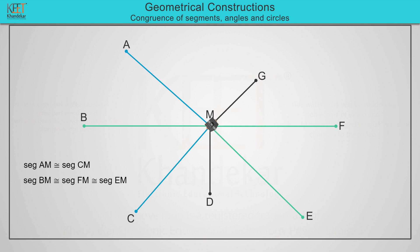Similarly, we also note that the length of segment GM is equal to length of segment DM. So we write segment GM is congruent to segment DM.